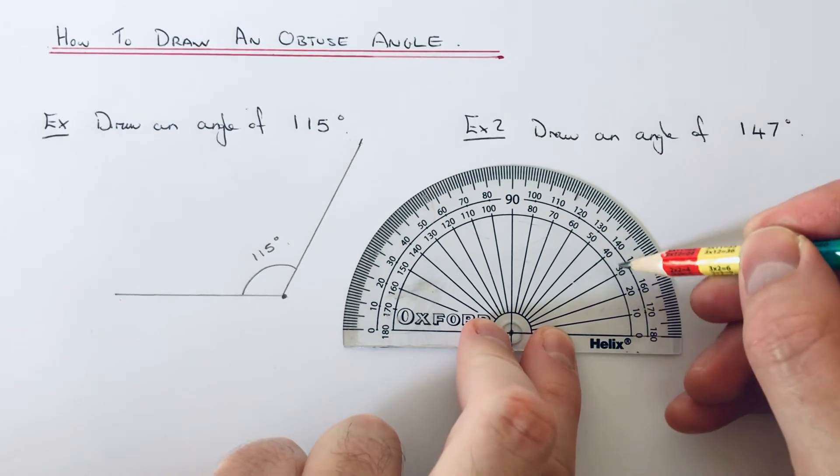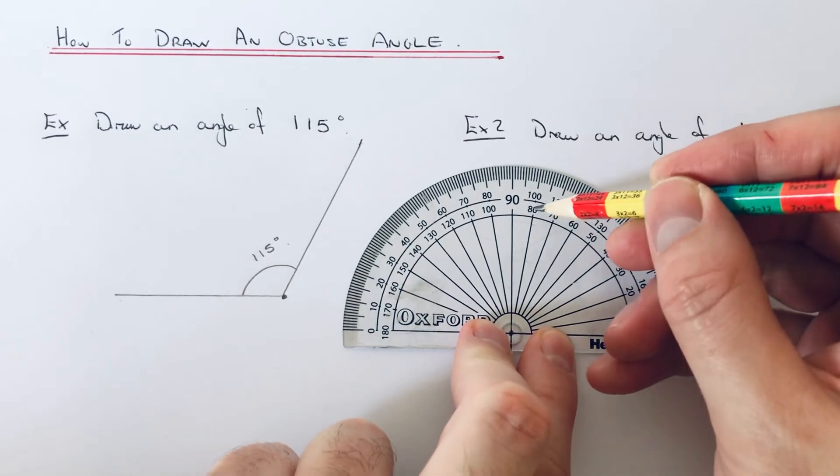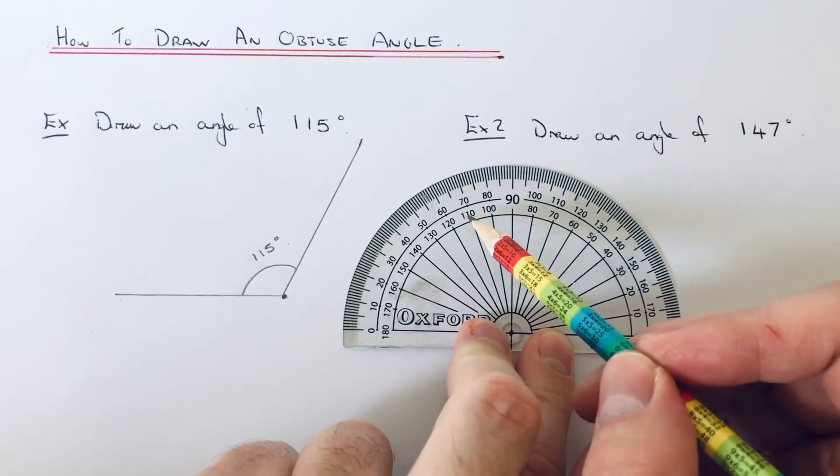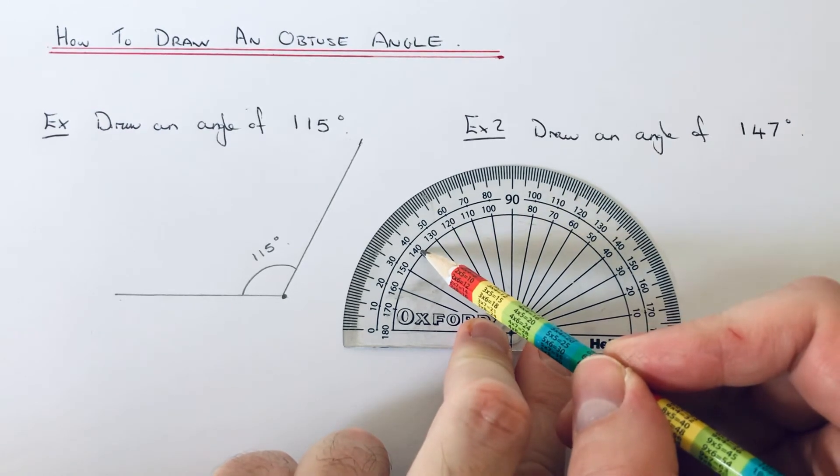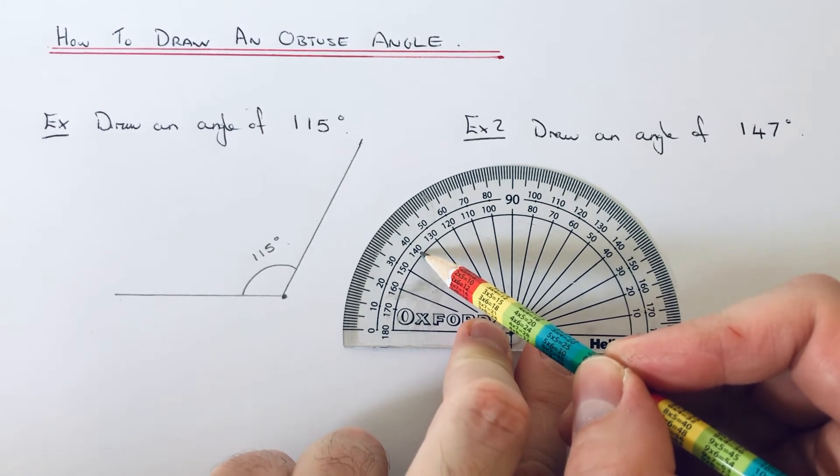So we've got 10, 20, 30, 40, 50, 60, 70, 80, 90, 100, 110, 120, 130, 140, and then we've just got to count an extra seven on.